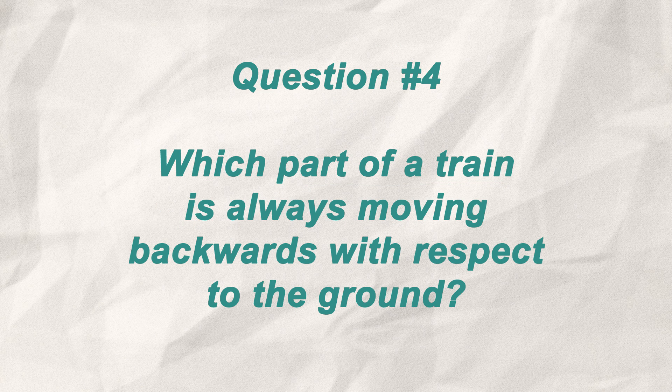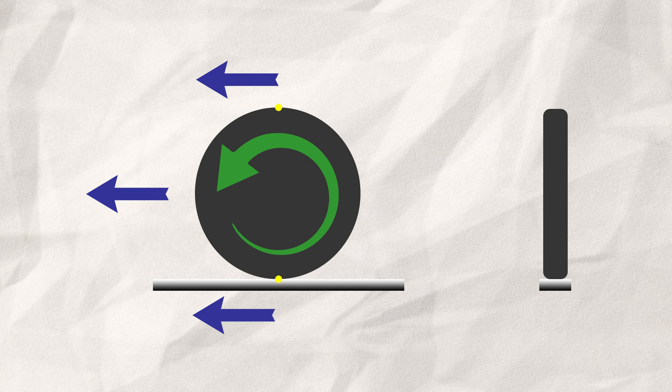Question 4. Which part of the train is always moving backwards with respect to the ground? This would have to be the wheels of the train, since everything else is definitely moving forwards. So let's take a look at it. We got our wheels on the tracks. Once they start rotating, they are moving forwards. And I mean every part of the wheel respectively with the same velocity.